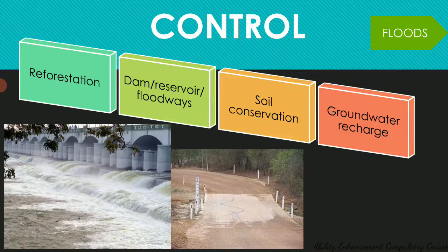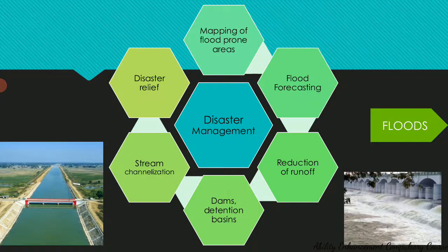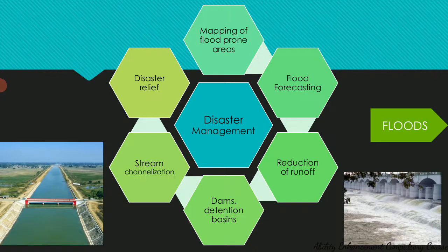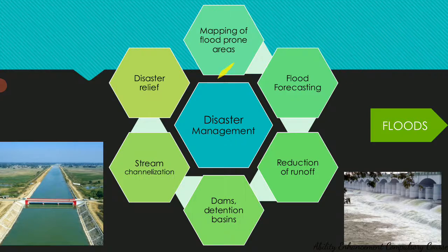Once a flood disaster strikes, flood risk management is a strategy that aims to reduce human and socio-economic losses caused by flooding. Disaster management includes all aspects: preparedness, preventive measures, protective measures, and organization of relief operations — all together aimed at reducing the impact of floods. The first measure is mapping of flood-prone areas, which can be done using satellite images and remote sensing imagery to identify vulnerable regions.